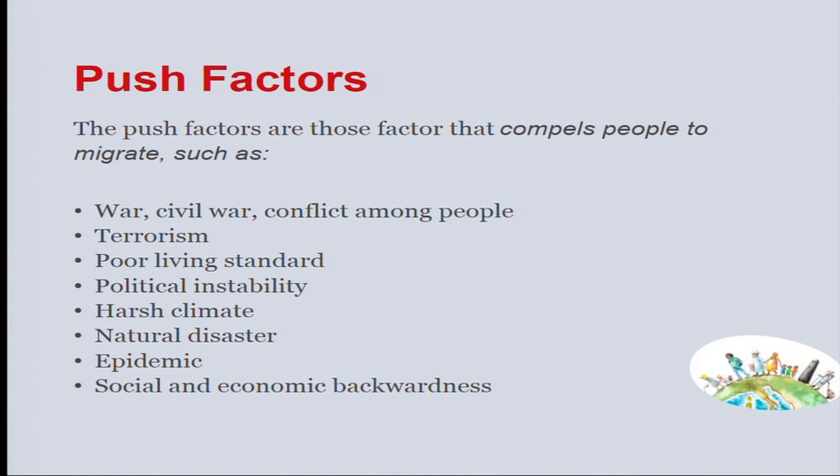Terrorism, poor living standard, political instability, very harsh and extreme climates where people cannot live, natural disaster — I told you about the Gujarat earthquake in 2001 — epidemics, any particular disease which breaks out in a particular part, and social and economic backwardness of that particular area.